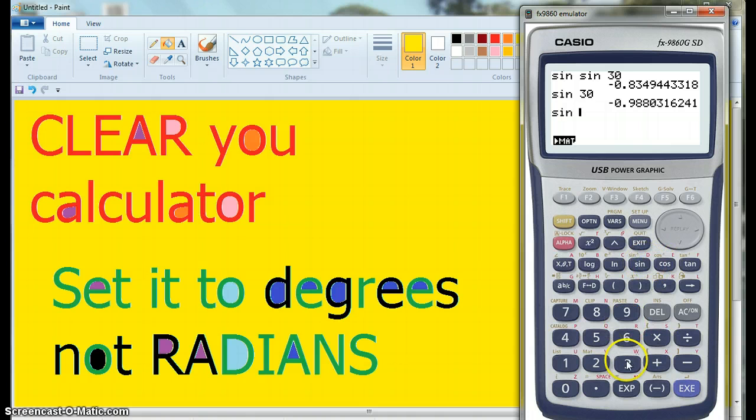And then, if I go sine of 30, I get 0.5, and I know I've got my calculator on the right setting.